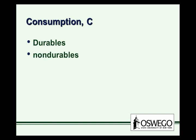Starting with consumption: personal consumption expenditures are usually categorized in terms of durables, such as a washing machine; non-durables, for example toothpaste; and finally services, such as getting a haircut or taking a class.